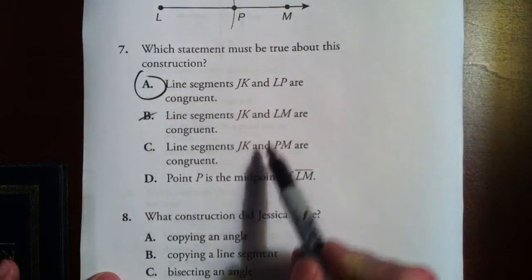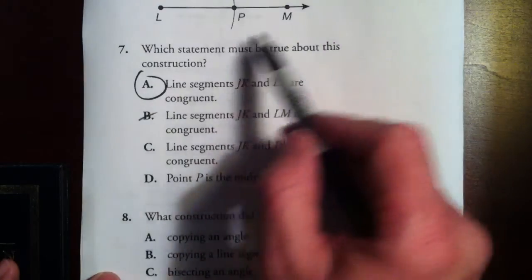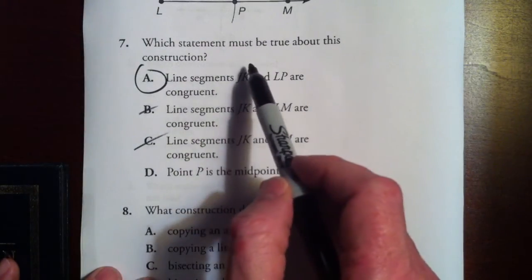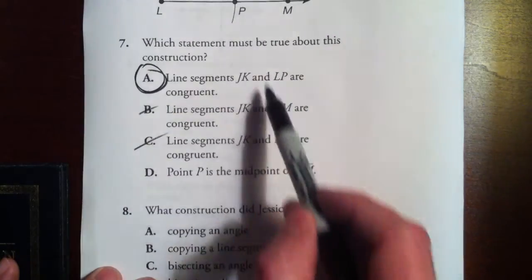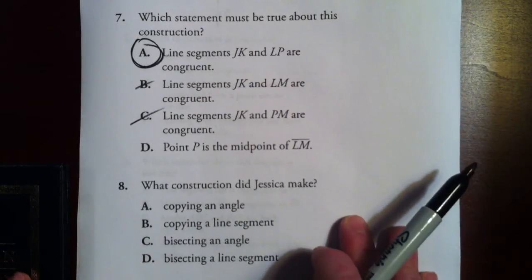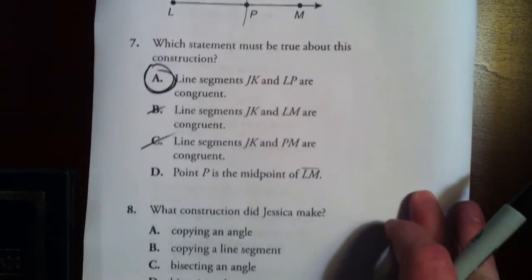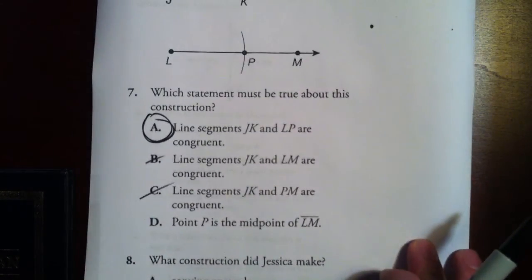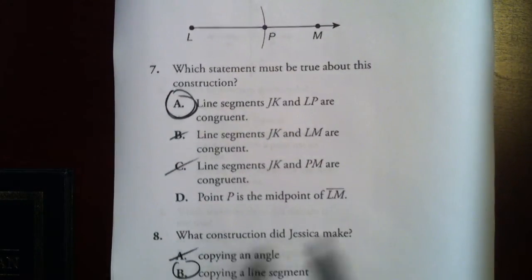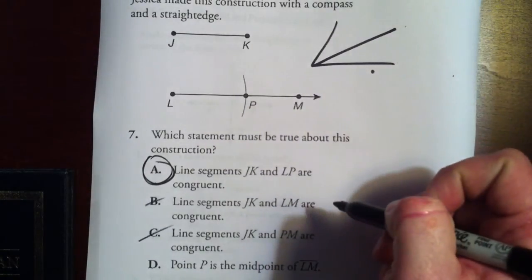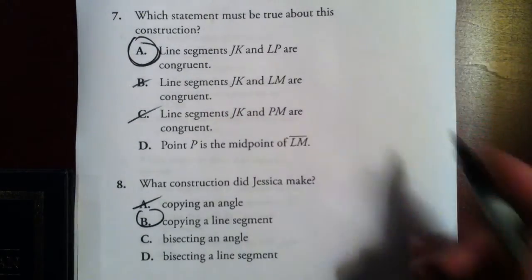Line segments JK and PM are congruent — that may be the case, but we absolutely don't know that, so eliminate it. Point P is the midpoint of L and M — again, it could be, but we're not sure. One thing we do know is A: line segment JK and LP are congruent. What construction did Jessica make? Copying an angle — no. Copying a line segment — that's more like it, this looks just like copying a line segment. Bisecting an angle would look different. Bisecting a line segment would look like this — not like that. So our choice is B.